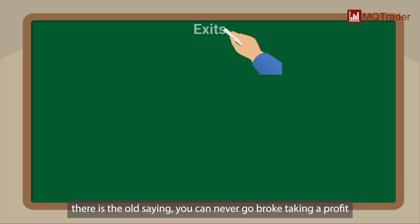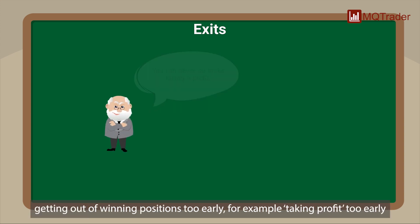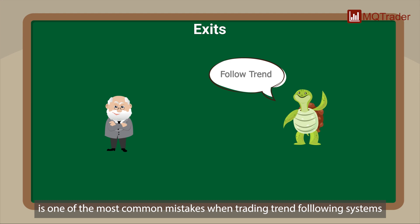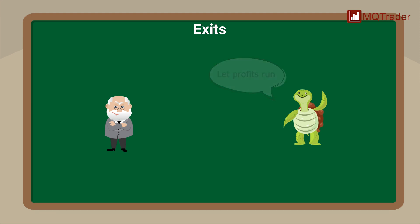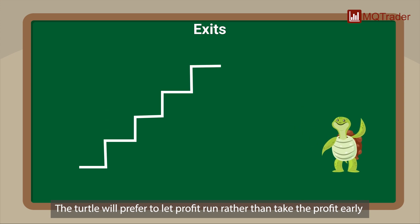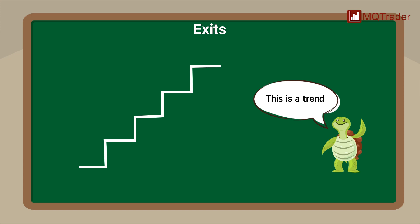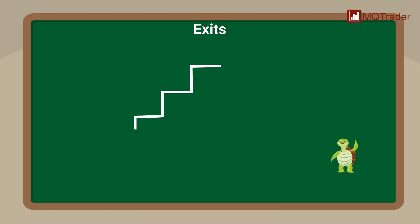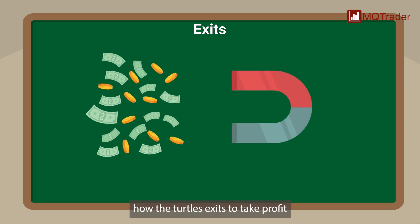There is an old saying: you can never go broke taking a profit. The turtles would not agree with this. Getting out of winning positions too early — taking profit too early — is one of the most common mistakes in trend-following systems. The turtles preferred to let profits run rather than take profit early when the trend is still intact, knowing that where you took a profit could make the difference between winning and losing.